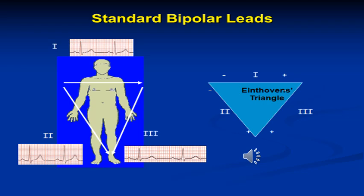The bipolar leads in ECG measure a voltage difference between two points. As indicated on the slide, they form an equilateral triangle with the heart at the center, and you can see where the positive and negative pole of each lead is on the triangle.